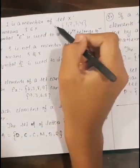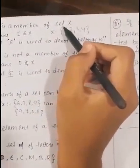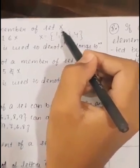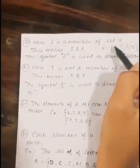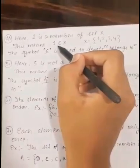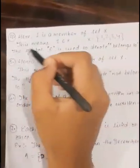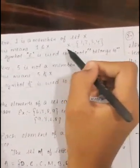Here in the set X = {1, 2, 3, 4}, 1 is a member of set X. This means 1 belongs to X. The symbol belongs to is used to denote belongs to.